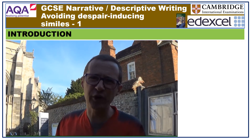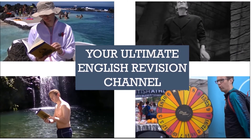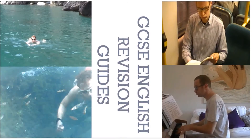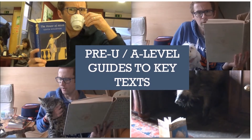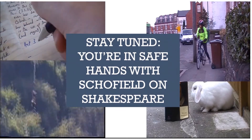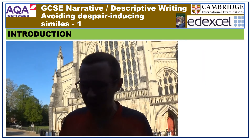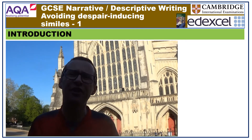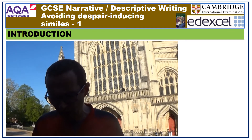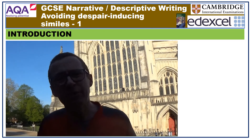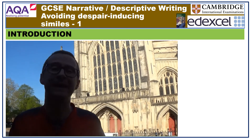Stay tuned, this is Schofield on Shakespeare. This video will contain a series of cheeky challenges. You will be given two anonymised similes to think about — one from Edith Wharton's splendid 1907 novel The Fruit of the Tree, and one from the writing of a past pupil. Then the fun will start. You will need to pause the video and decide which simile is likely to make an examiner weep and which is likely to make them beam. Let's get started.